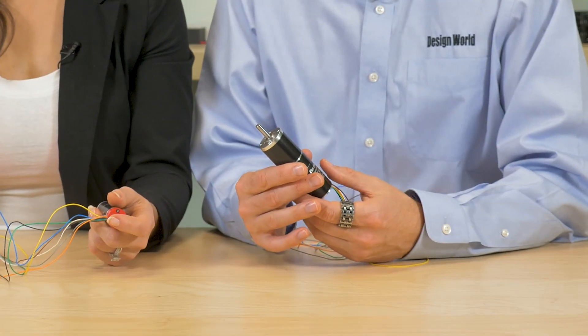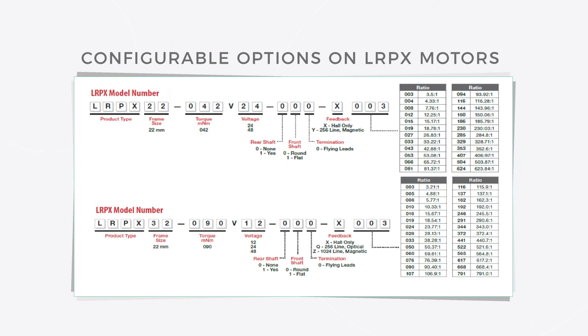In contrast, the LRPX 32 which Paul is holding is a 32 millimeter motor with a peak torque of 8 newton meters, a continuous stall torque to 6 newton meters, and speeds to a little shy of 2500 rpm.